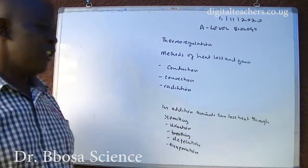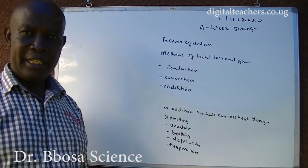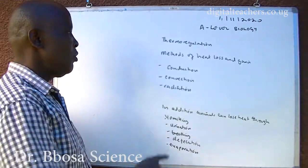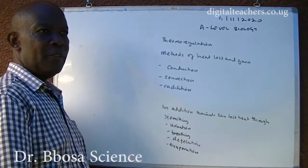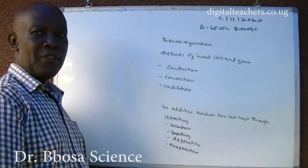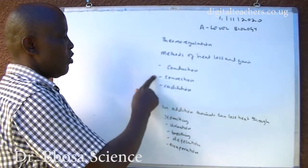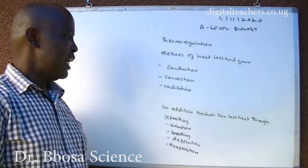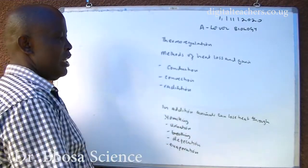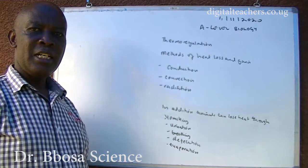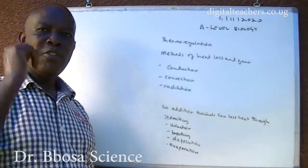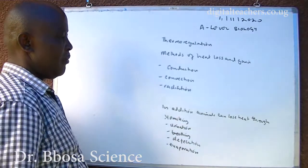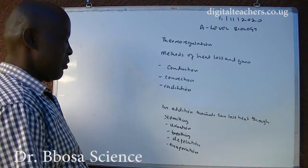Methods of heat loss and gain. The body can lose heat or gain heat through conduction — heat transfer in solids; convection — heat transfer in liquids and gases; and radiation — heat transfer in a vacuum, for example from the sun. In addition, animals can lose heat through other means.